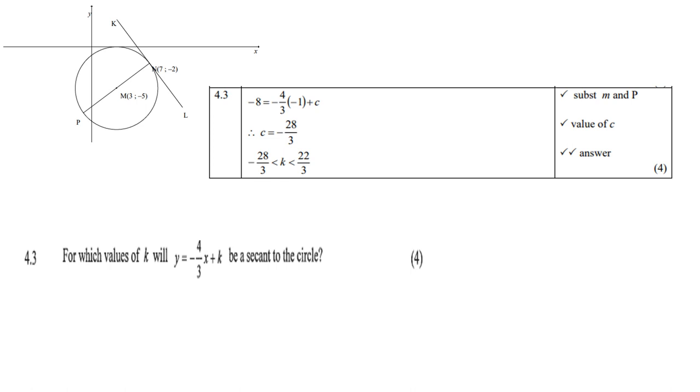So 4.3. Remember now what is a secant line. A secant will touch the circle at more than one place. For which values of K will Y equals minus 4 thirds X plus K be a secant to the line. For it to be a secant on the line, you're going to use the points (-8, -1) into the straight line. Therefore, you get C equals minus 28 over 3. So K must be greater than minus 28 over 3, less than 22 over 3.